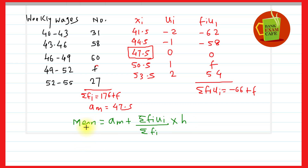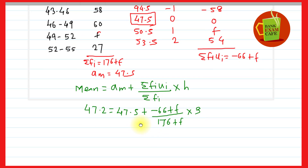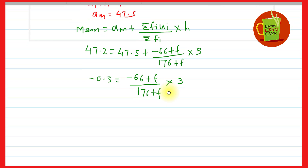The mean is given as 47.2, assumed mean is 47.5, Σfi·ui = −66+f, Σfi = 176+f, and h = 3. Substituting: 47.2 = 47.5 + [(−66+f)/(176+f)] × 3. Taking 47.5 to the left side: 47.2 − 47.5 = −0.3, which equals (−66+f)/(176+f) × 3. This can be written as −3/10 × (176+f) = (−66+f) × 3.